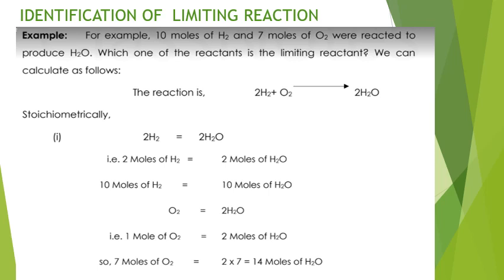Now, how do we identify the limiting reactant in chemical reactions? Consider 10 moles of hydrogen and 7 moles of oxygen reacting to produce water. The balanced equation is: 2H₂ + O₂ → 2H₂O. This tells us 2 moles of hydrogen react with 1 mole of oxygen to produce 2 moles of water. You have been given 10 moles of hydrogen.